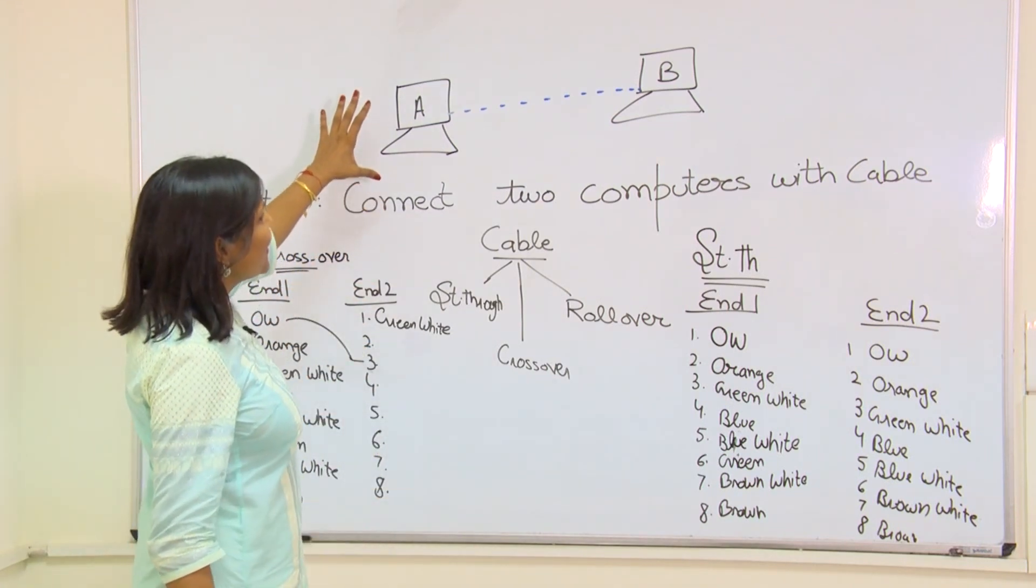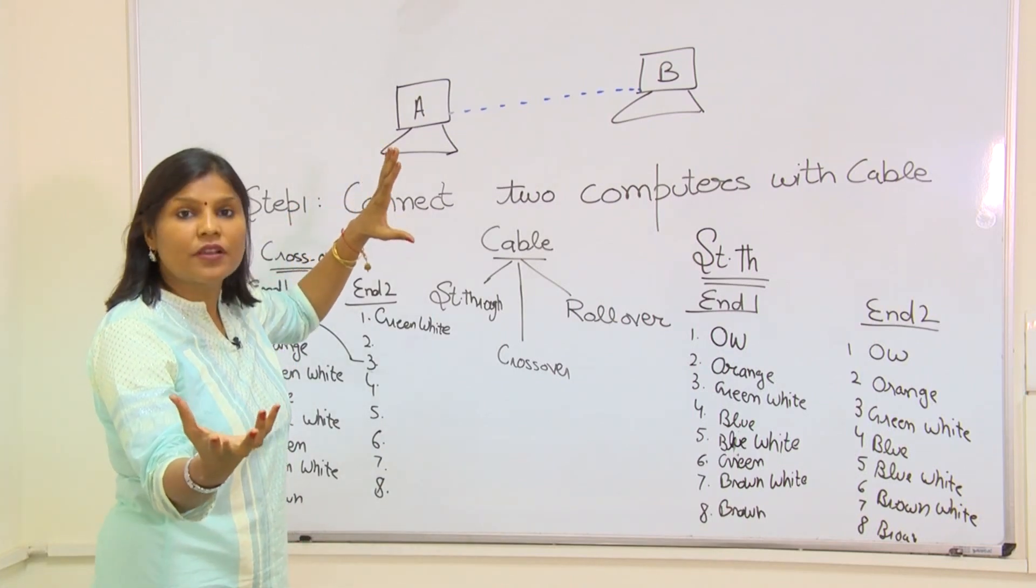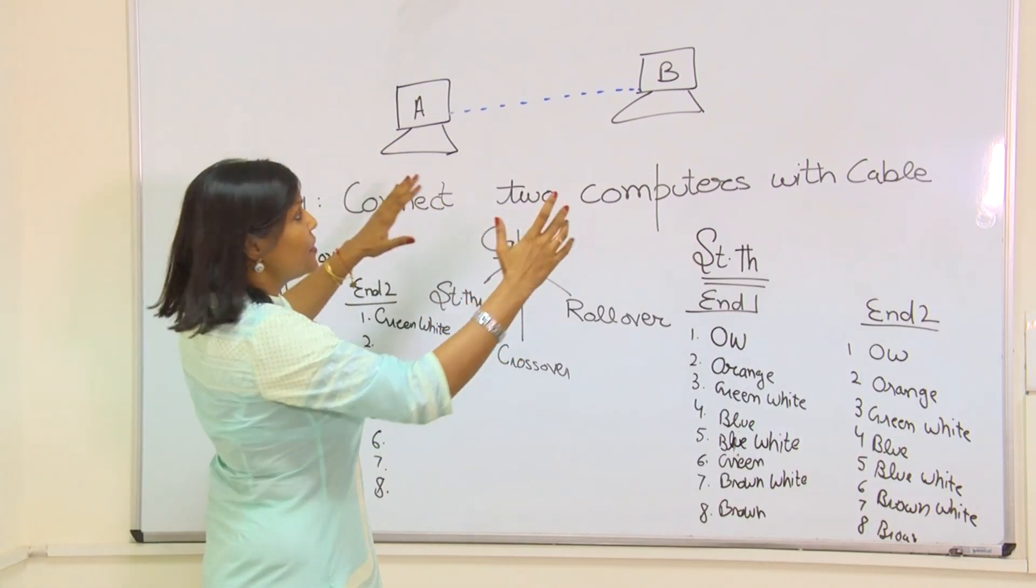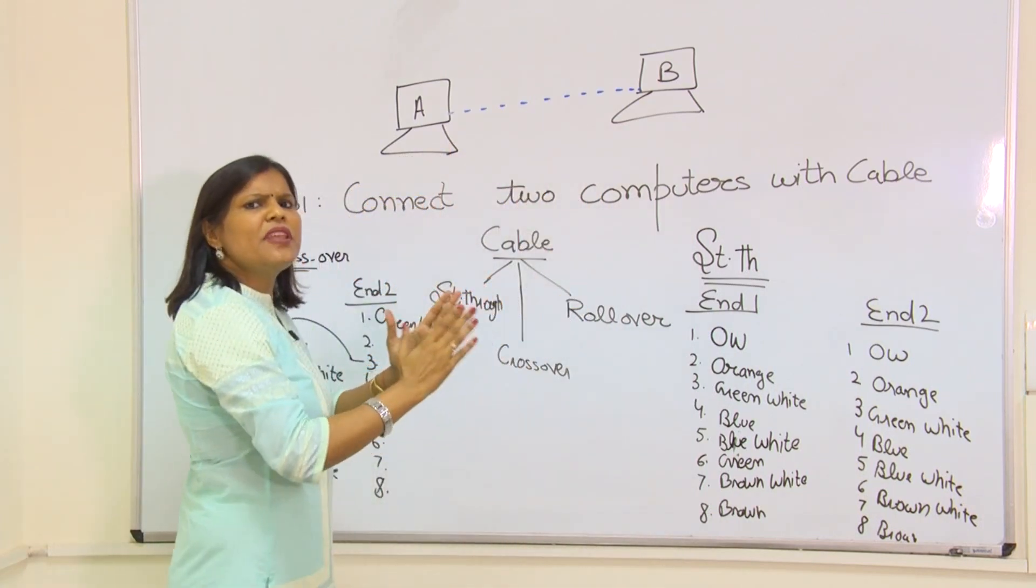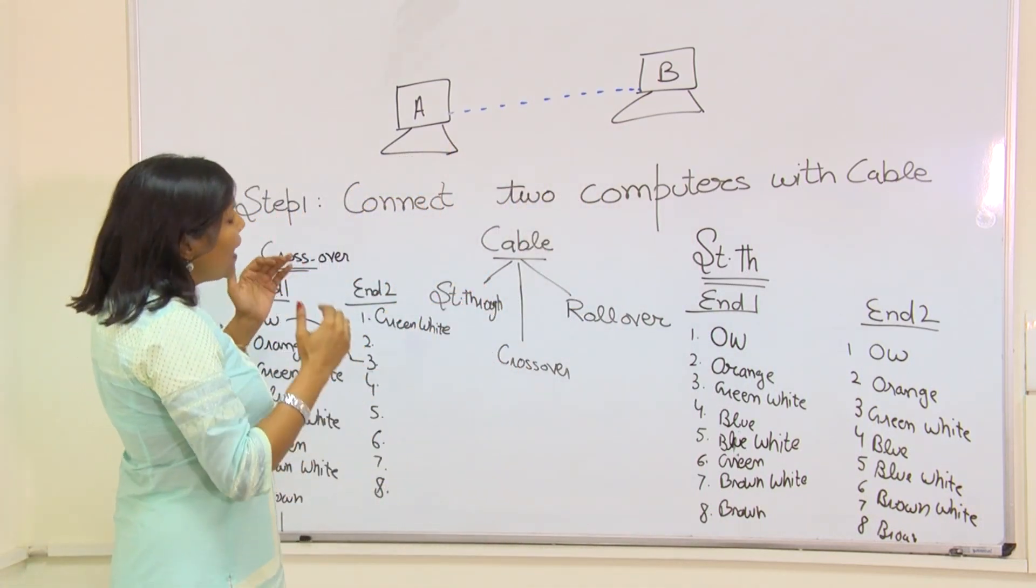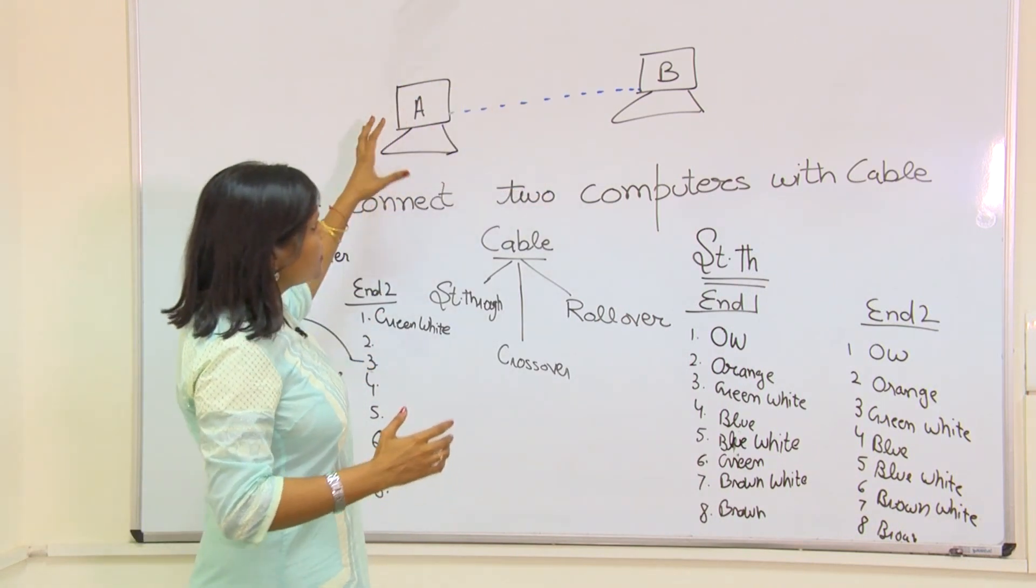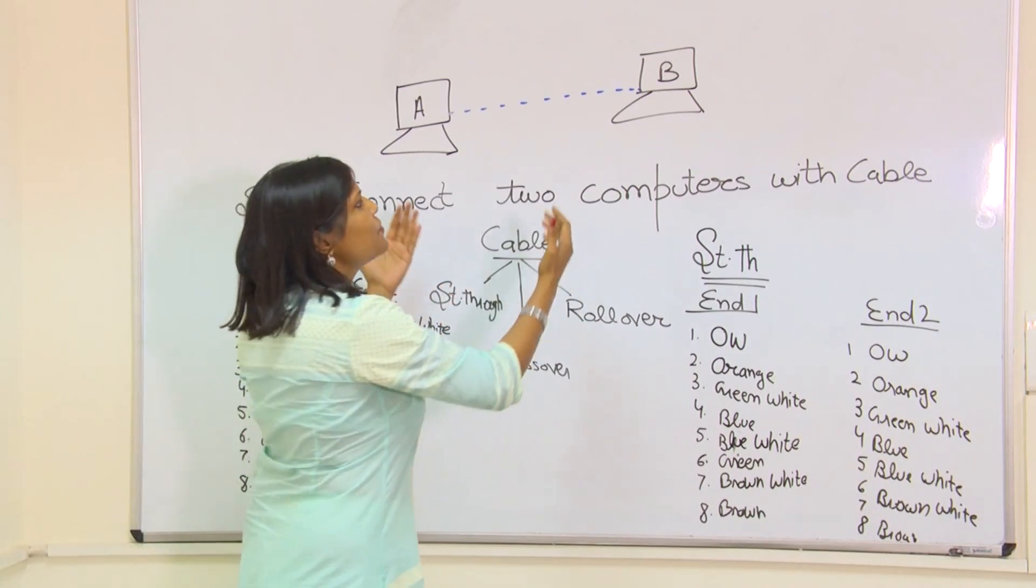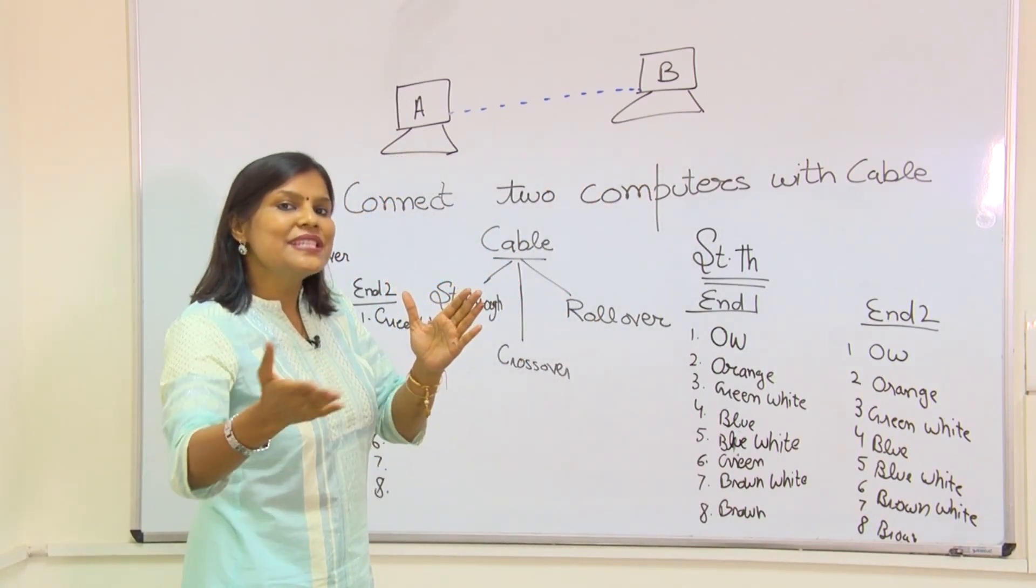Now I have taken two computers, that is very basic definition of networking, computer networks, that is to connect two computers with the wired medium. Very basic definition. If I want to do networking in these two computers, that is I want to share the resources between these two systems, I have to follow some steps.